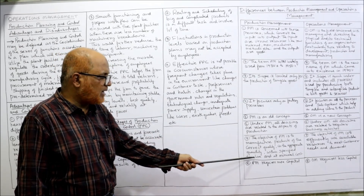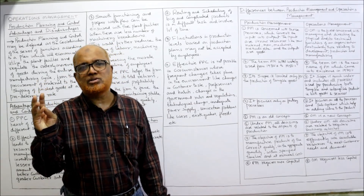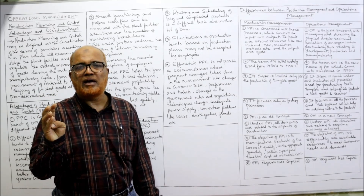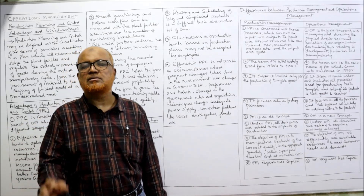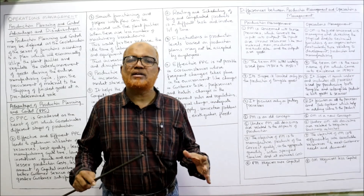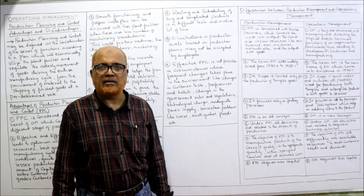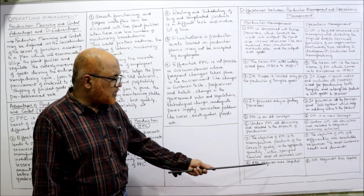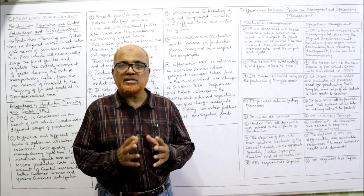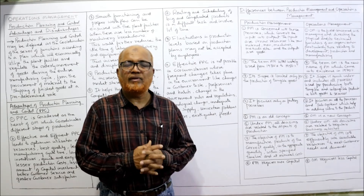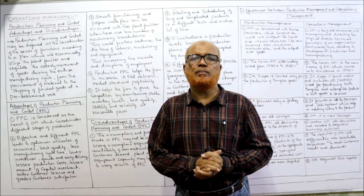The objective of production management is to manufacture products of the correct quality, in the appropriate quantity, within the specified time, and at minimal cost. The objective of operations management is to efficiently utilize available resources to meet customers' needs and demands. Finally, production management requires more capital compared to operations management, which requires less capital. These are the key differences between production management and operations management. That is the end of this video; we will take up the next topic in the next video.